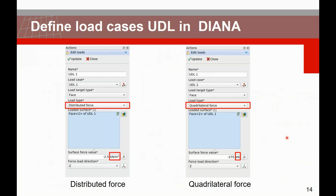We can define the UDL load cases in two ways. The first is using the distributed force — you select a phase and use the distributed force option, enter a surface force value, for example 2.5 kN per square meter for a lane. The second option is the quadratorial force — you select a phase and choose the quadratorial force option. The surface you select can be defined independently of the construction and mesh, so you don't need to imprint it. The only difference is that you enter a total force which will be uniformly distributed over the area.